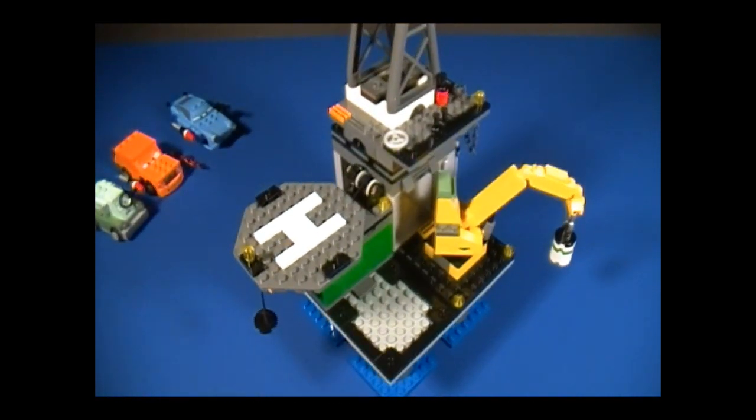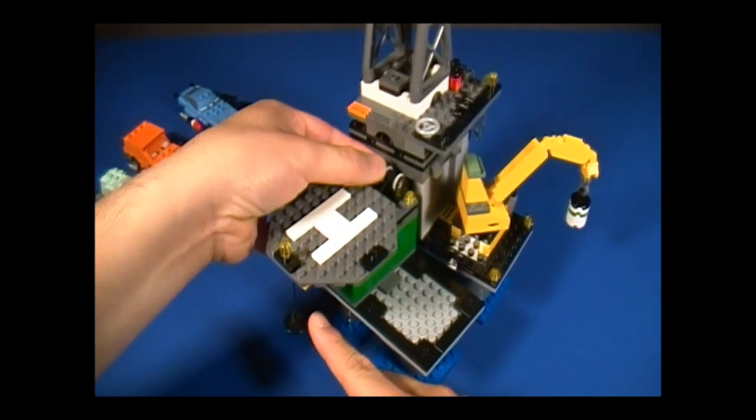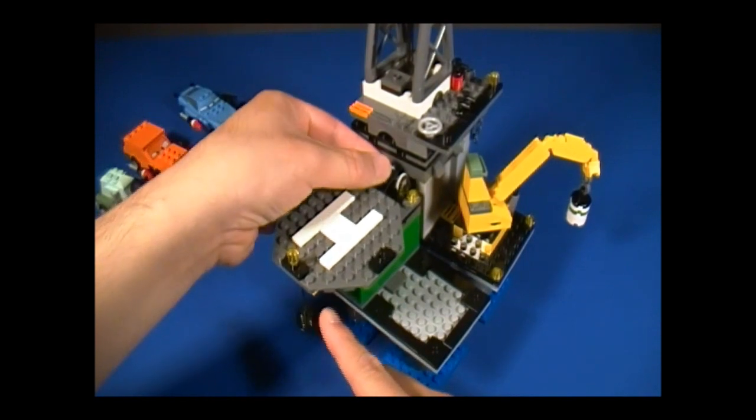And going back here, we have the helipad. You can turn this knob to bring the string up and down. This is what you use to pull up the cars out of the water.